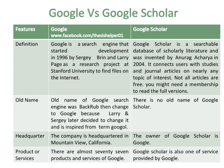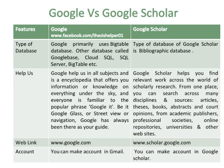There are almost 77 products and services of Google, and Google Scholar is one of those services. Google primarily uses BigTable database, along with other databases such as Google Base, Cloud SQL, and SQL Server. The type of database used by Google Scholar is a bibliographic database.